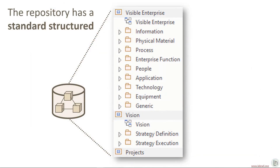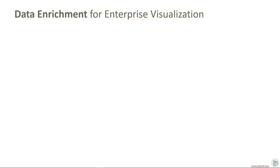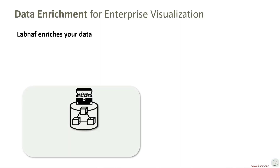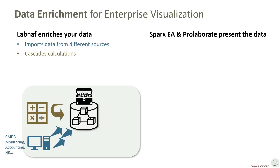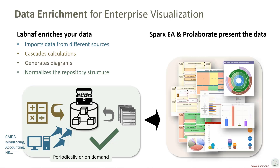The repository has a standard structure that is consistent with the structure of the process. To visualize your enterprise, you need more than tools. You need also rich data that Sparx EA and Prolaborate can then display. LabNorv can automatically import, calculate values, generate diagrams, normalize the repository structure, generate implicit connectors, and many other things. LabNorv can either schedule these tasks or you can run them on demand. As a result, Sparx EA and Prolaborate can display very rich and useful information.